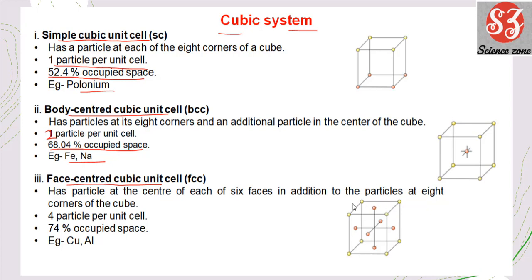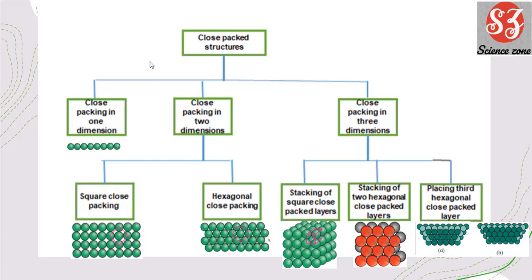Next is the face-centered cubic unit cell, with atoms at corners and half an atom on each face — total 4 particles per unit cell — and packing efficiency is 74%. Example: copper and aluminium. Next is close packed structures in solids, which are of three types: close packing in one dimension, close packing in two dimensions, and close packing in three dimensions.